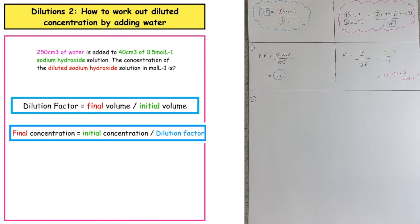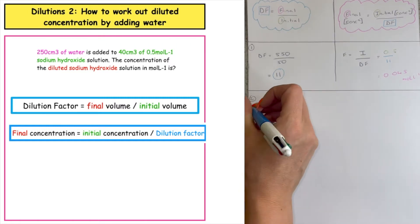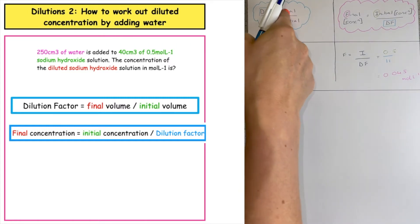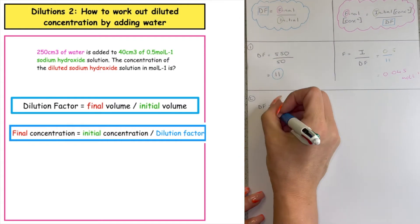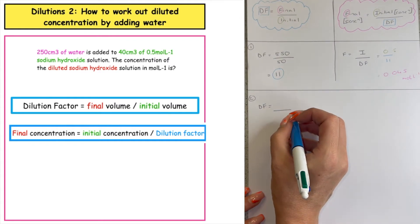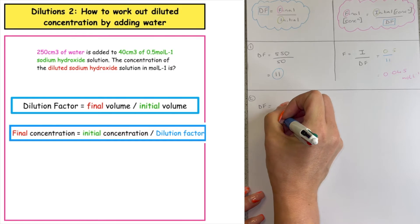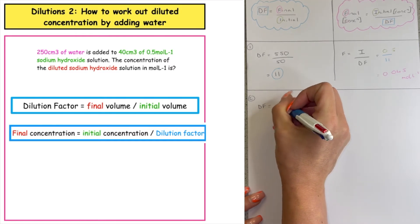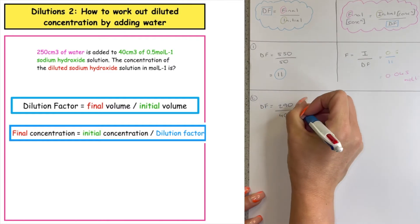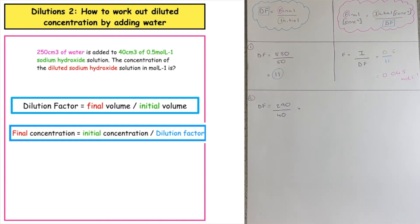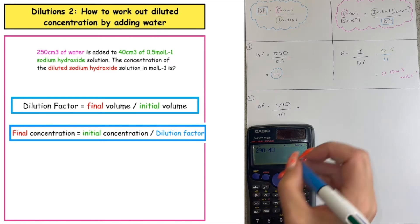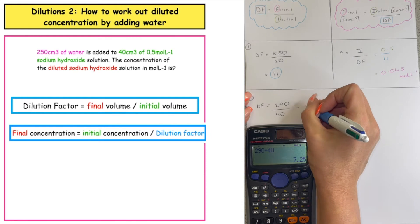In example two, we do the exact same steps. First, we work out the dilution factor, which is equal to the final volume over the initial. The initial volume of sodium hydroxide solution is 40. Adding 40 plus 250 gives a final volume of 290 centimetres cubed. So 290 divided by 40 gives a dilution factor of 7.25.